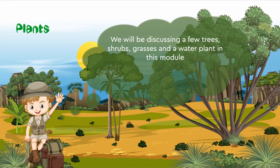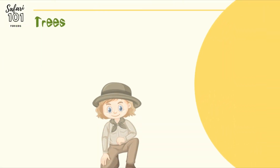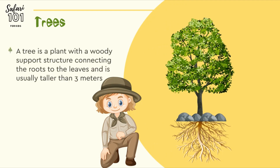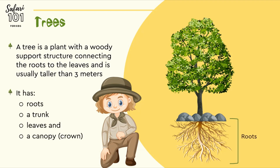We will be discussing a few trees, shrubs, grasses and a water plant in this module. What is a tree? A tree is a plant with a woody support structure connecting the roots to the leaves that is usually taller than 3 meters. It has roots, a trunk, leaves and a canopy or crown.